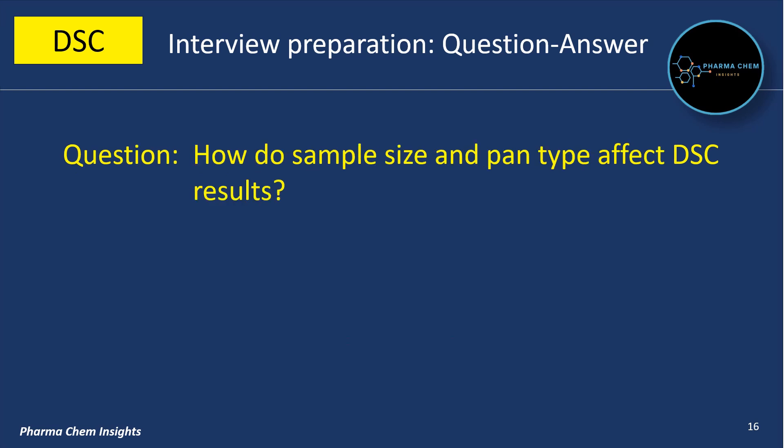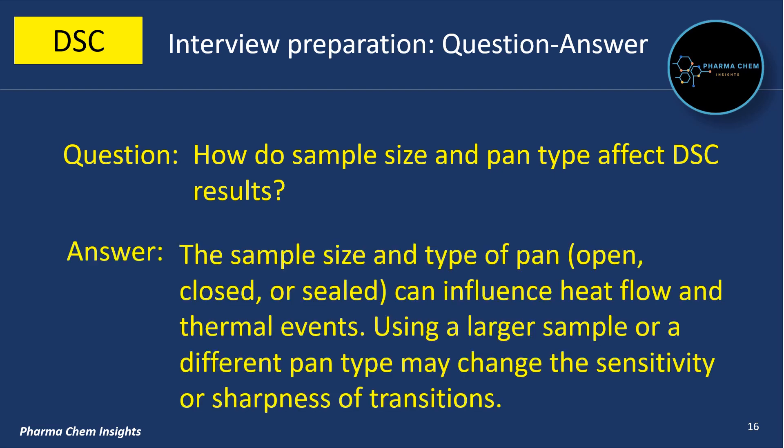Next question: How do sample size and pan type affect DSC results? The sample size and type of pan used in DSC — such as open, closed, or sealed — can influence heat flow and thermal events. Using a larger sample or a different pan type may change the sensitivity or sharpness of transitions.